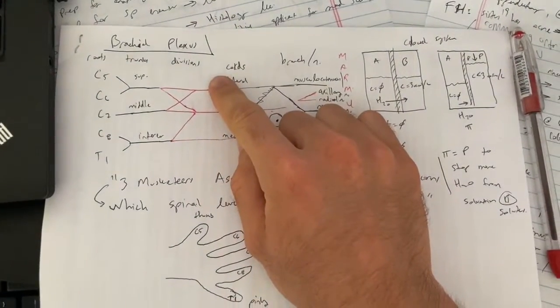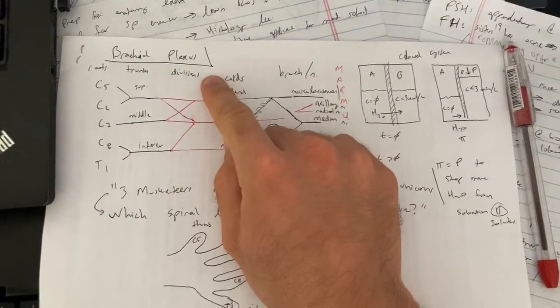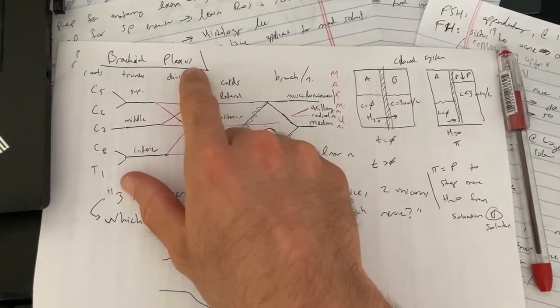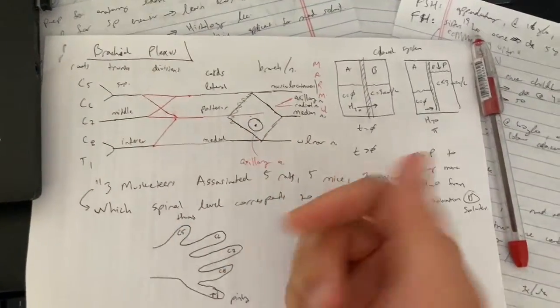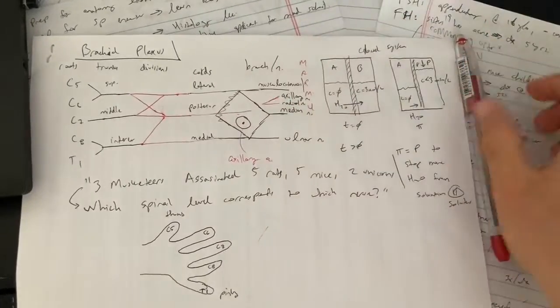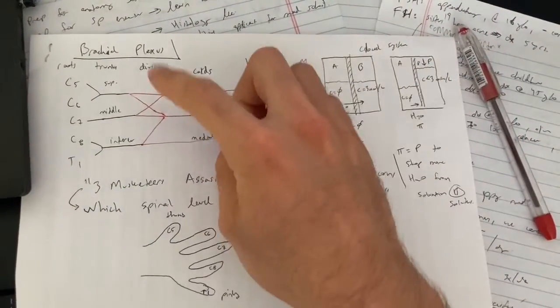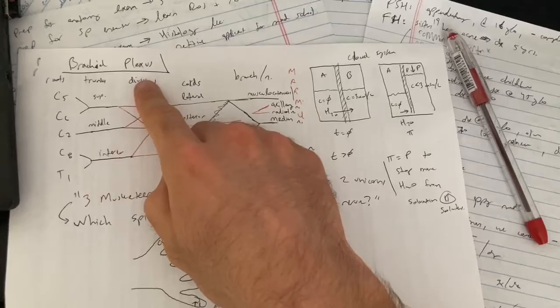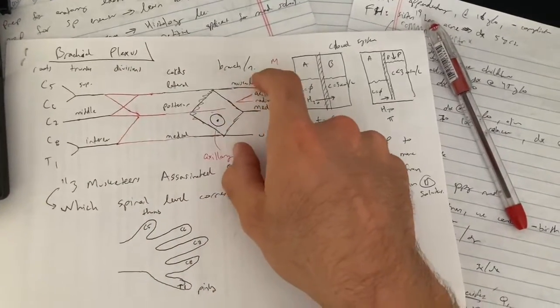All right guys, so we are going to be talking about a memorization trick for how you map the brachial plexus roots to the actual nerves. The brachial plexus is a pretty complicated map. You've got roots, trunks, divisions, cords, and then branches or nerves.